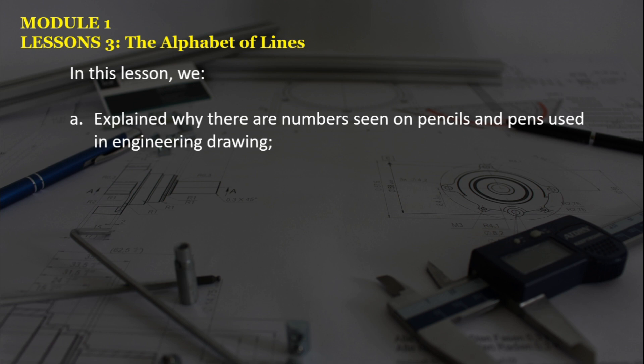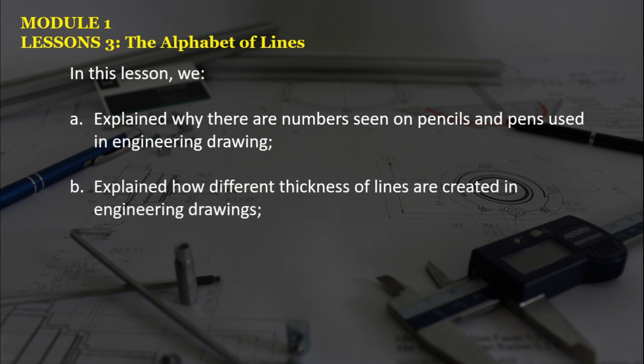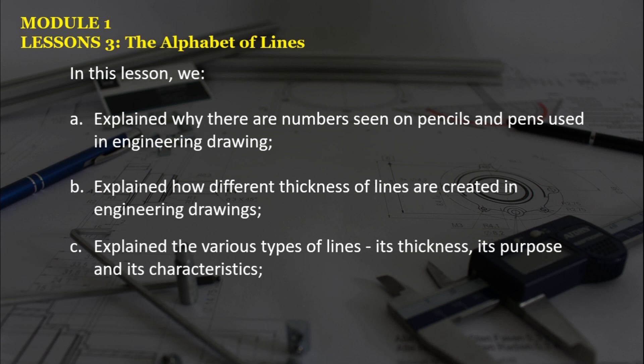We have emphasized that the numbers on pencils will tell us the hardness and shade of that pencil, while the numbers on pens will indicate the weight or thickness of the lines which it can create. Next, we explained how different thicknesses of lines are created in engineering drawings, again referring to the numbers seen on pens. And lastly, we explained the various types of lines, its thickness, its purpose, and its characteristics — starting with the object line, hidden line, section line, cutting plane line, break line, border line. All of those types of lines have meanings, have their thickness, have their purpose, and have their very own characteristics.